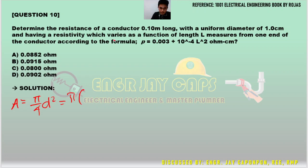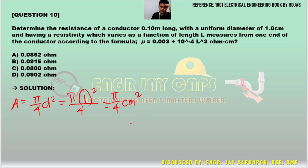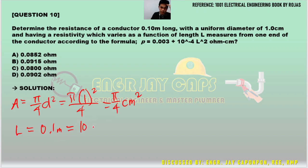The diameter is 1 centimeter, so area = pi over 4 centimeter squared. The length is 0.1 meter, converted to 10 centimeters. The formula is R equals resistivity times length over area. Since resistivity varies with length, we must integrate: R = (1/A) times the integral from 0 to 10 of rho(L) dL.